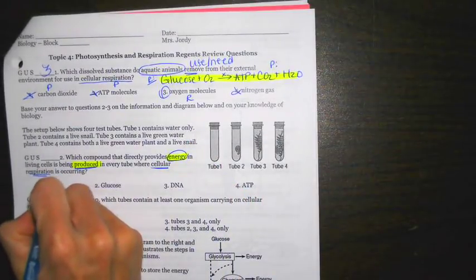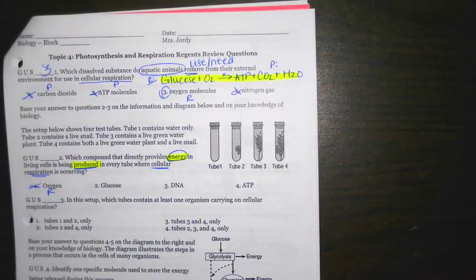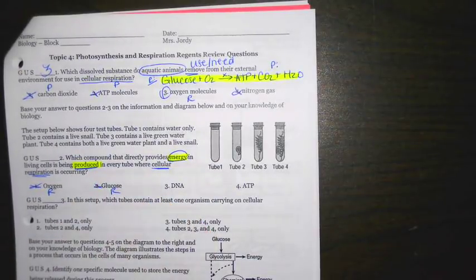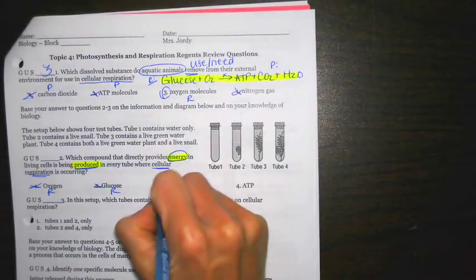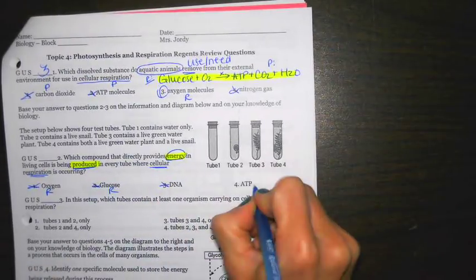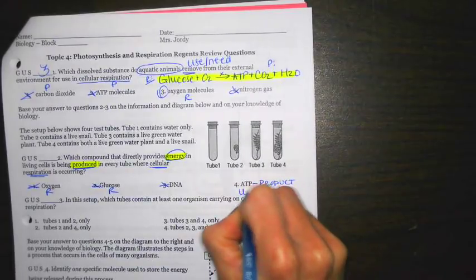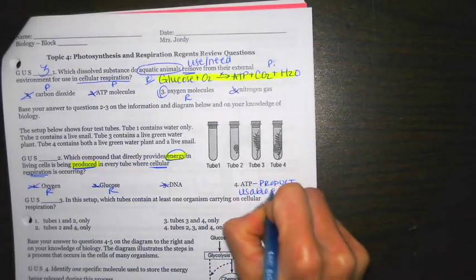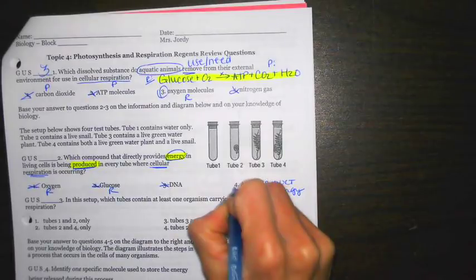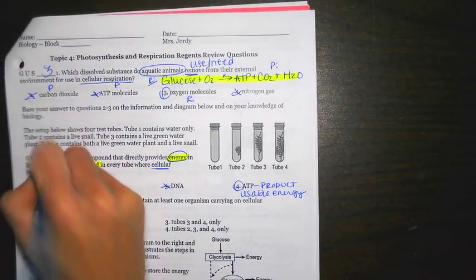We're talking about something that's being produced from this and is providing the energy. Oxygen is a reactant, so we can cross that one off. Glucose is a reactant. DNA, not listed in the formula, cross that one off. And then finally, ATP is going to be my product. Remember, many times you call this usable energy. So best answer choice there is going to be four.